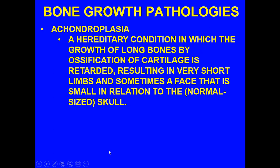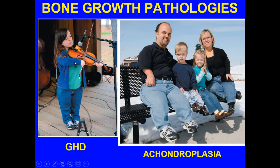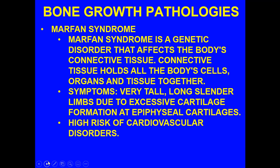Achondroplasia is a hereditary condition in which the growth of long bones by ossification of cartilage is retarded, resulting in very short limbs and sometimes a face that is small in relationship to the normal-size skull. You can see the shortened limbs, the body, and the smaller facial area compared to the rest of the skull.